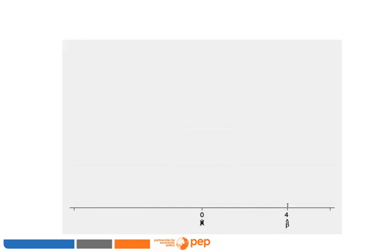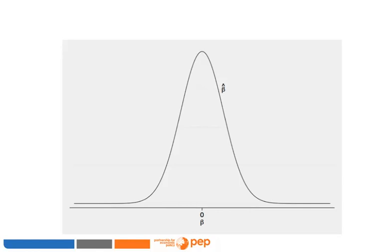Our assumption about the treatment effect being zero was probably wrong: if the true treatment effect is zero, it is very unlikely we would obtain a beta-hat as far away as four. Now suppose beta-hat is minus six — this is an even worse situation. If the true treatment effect was zero, there is basically no way we could randomly draw a minus-six value from this distribution. This distribution must be the wrong one; the true distribution is not centered around zero. In this second example, we reject the null hypothesis of zero treatment effect.